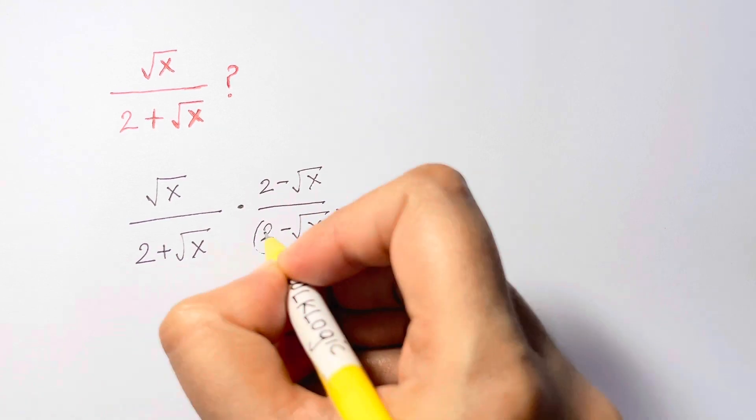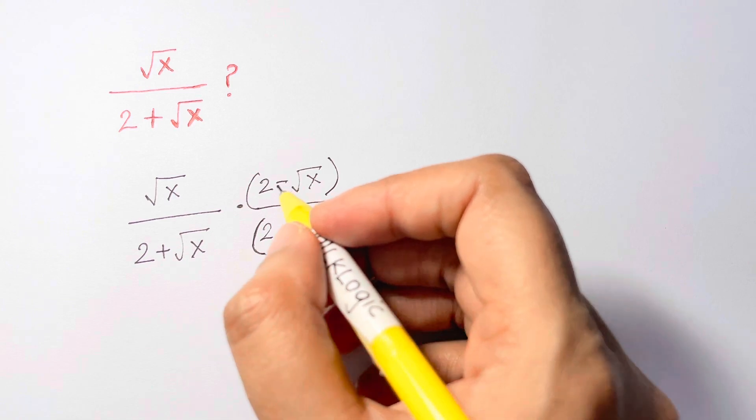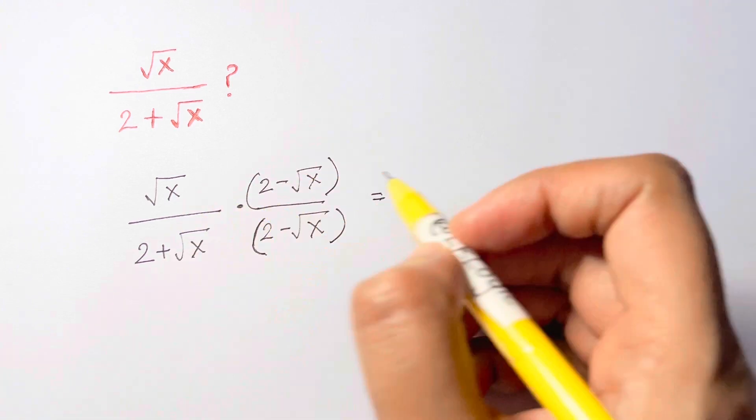Now what you can see, we just have to multiply root x times 2 minus root x. So root x times 2 is 2 root x.